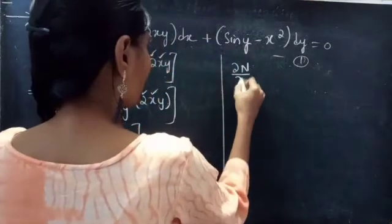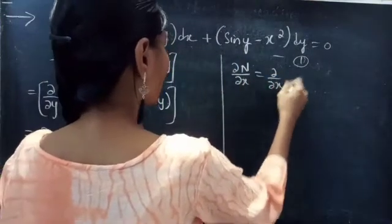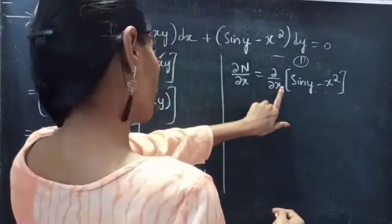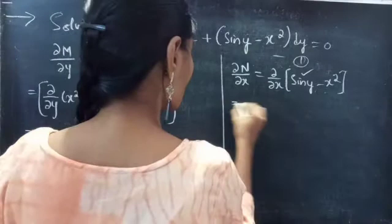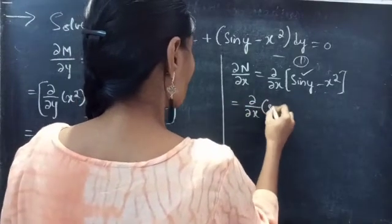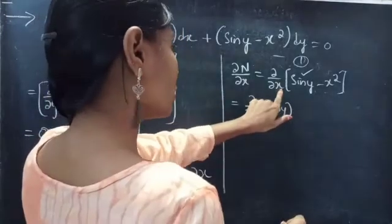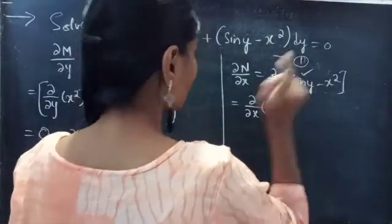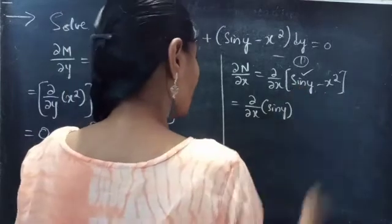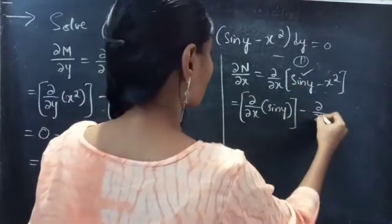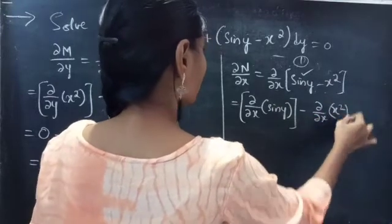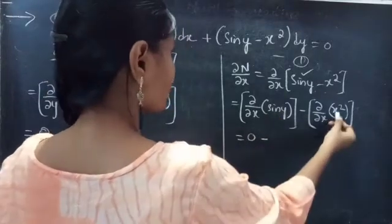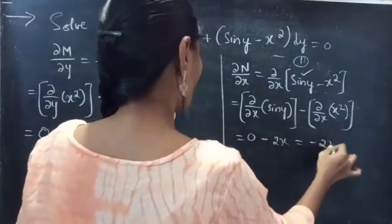Now let's find the partial derivative of N with respect to x, that is ∂N/∂x, where N equals sin y minus x squared. Since we are doing the partial derivative with respect to x, sin y will be treated as constant. The partial derivative of sin y with respect to x is 0. Minus the partial derivative of x squared with respect to x is 2x. So ∂N/∂x equals minus 2x.